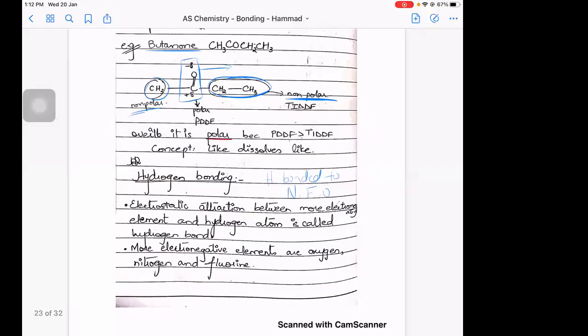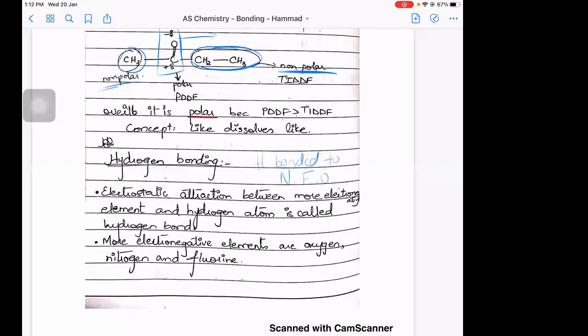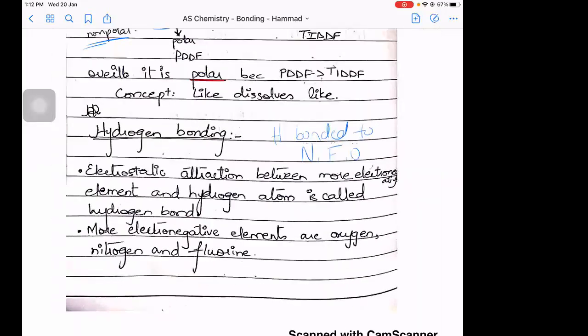Simply put, a hydrogen bond is basically the electrostatic attraction between a more electronegative element and a hydrogen atom, and that is called the hydrogen bond.